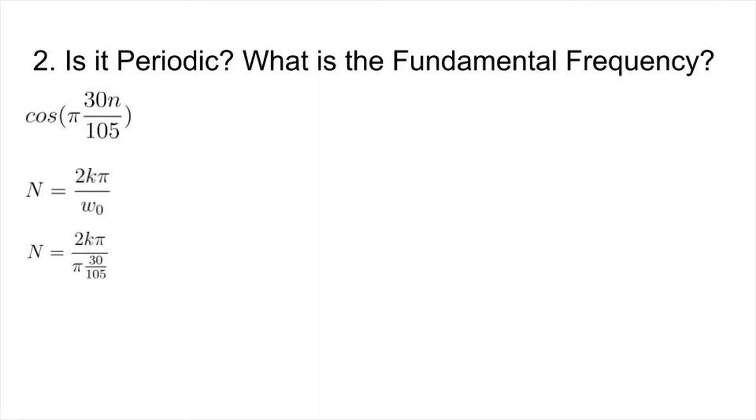Now all we have to do is simplify this. We will first start out by canceling out those π's. So we can get N = 2k/(30/105). Next, we will get 105 and multiply it with 2 to continue to simplify this. And we end up with N = 210k/30. One last round of simplification, and we will get our answer. We end up with N = 7k. Since 7 is already a nice whole number, we have a rather straightforward answer. Yes, this is periodic with period of 7, and the fundamental frequency is 1/7.